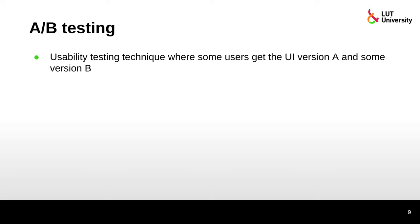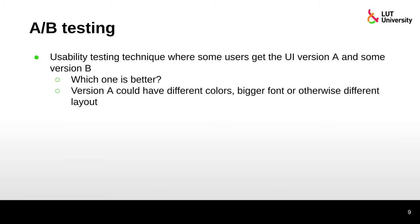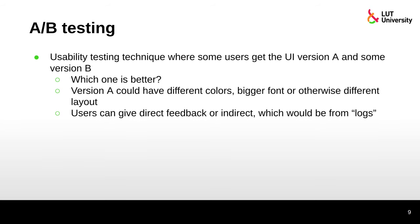A/B testing is usually used in usability testing. We have a user interface version A and a user interface version B — which one is better? Version A could have different colors, bigger font, or a different layout compared to version B. We could compare an Android user interface and an iPhone user interface. Users can give direct feedback, for example saying they prefer version B.